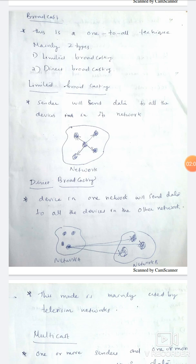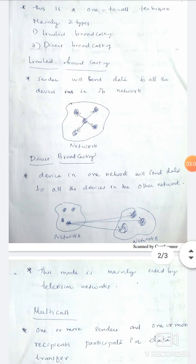The next type is Direct Broadcasting. For example, if there is a network A and network B, and you have a collection of routers, you can send data from one network to all hosts on another network. If you have network A, you can collect data on the other side. This cross-network transmission is called Direct Broadcasting.